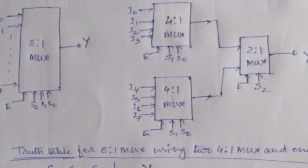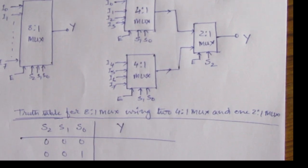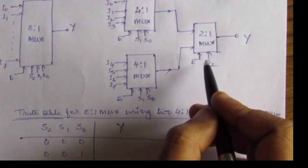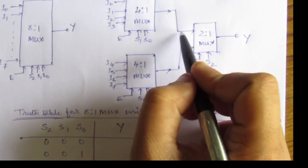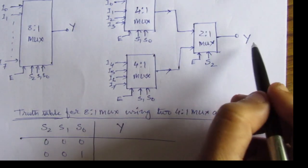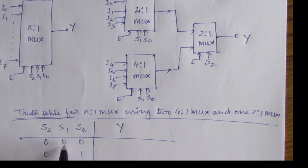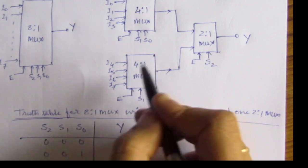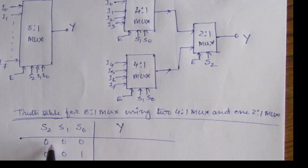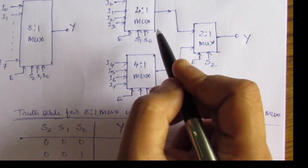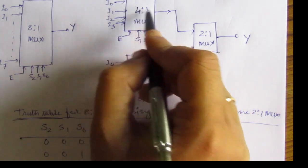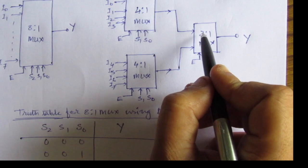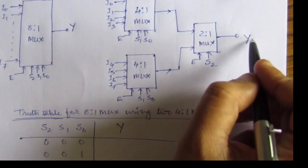Let us examine the first case. When S2 equals 0, the upper 4-to-1 multiplexer output is enabled and directed to the final output. When S1 equals 0 and S0 equals 0, input I0 is directed to the output of the first multiplexer, and I0 comes as the input to the 2-to-1 multiplexer. So we get Y equal to I0.